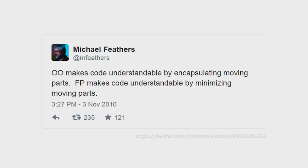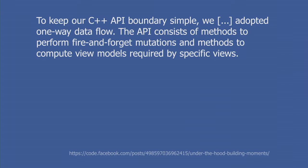Michael Feathers observed a few years ago, which I thought was a very good way of reasoning about it: object orientation makes code understandable by encapsulating moving parts — you co-locate and modularize the mechanics. Functional programming makes code understandable by minimizing the moving parts. They both have a philosophy of moving parts: one is containment and the other is reduction. And this can be a very practical mechanism.